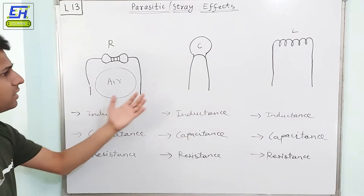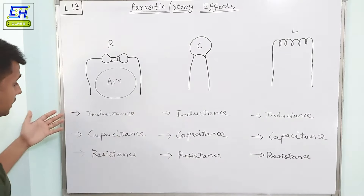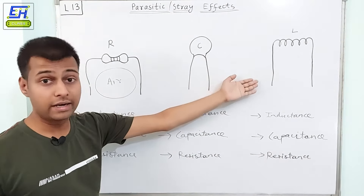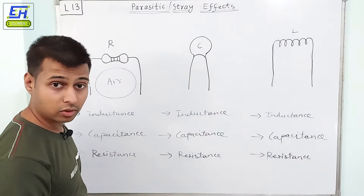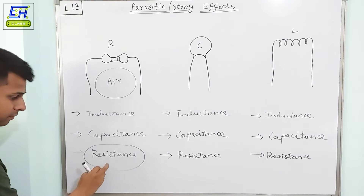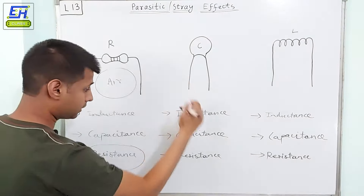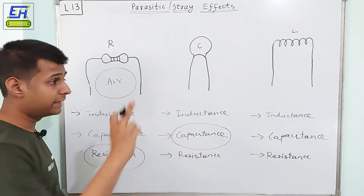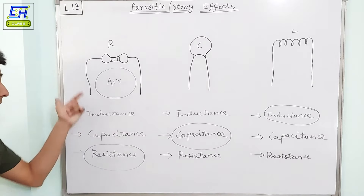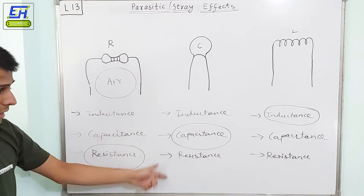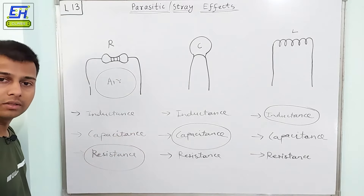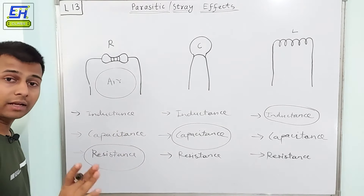So observe that all three components have all three properties of each other: the resistor will have inductance, capacitance, and resistance; the capacitor has inductance, capacitance, and resistance; and the same for the inductor. The difference here is about the dominance of properties. For example, in the resistor, definitely the resistance property will dominate. In a capacitor, the capacitance property will dominate. In an inductor, the inductance property will dominate. So what about the other properties? In a resistor — inductance and capacitance; in a capacitor — inductance and resistance; in an inductor — capacitance and resistance. These properties are actually known as parasitic elements.